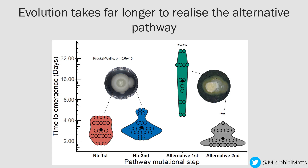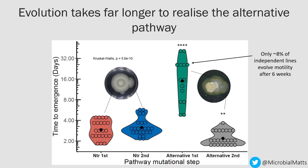We immediately get some explanation as to why the NTR pathway is used preferentially. This violin plot shows time to emergence of the phenotype in days on the y-axis. The first and second steps of the NTR pathway occur within two to four days, whereas the first step of the alternative pathway takes on average two weeks to evolve. Once you have the first step, the second step evolves rapidly. Interestingly, only 8% of the lines I evolved gained motility after six weeks, compared to 100% for the NTR pathway, suggesting the alternative pathway is less visible to selection.